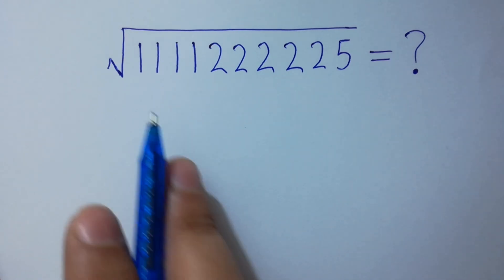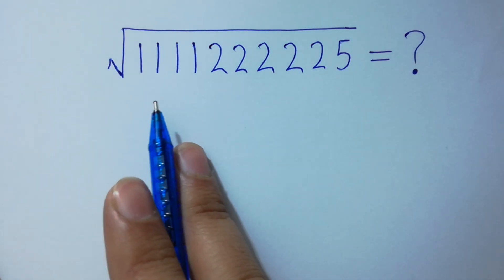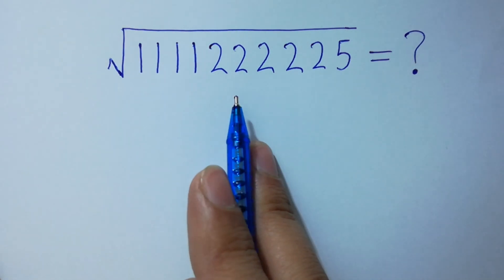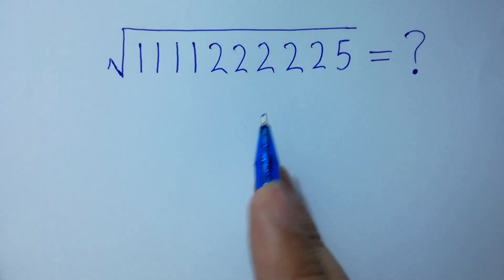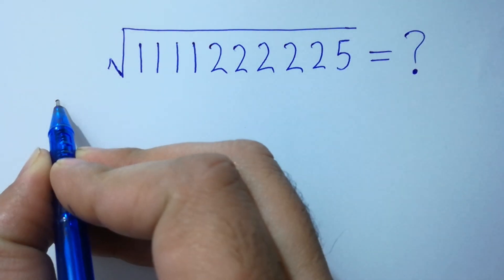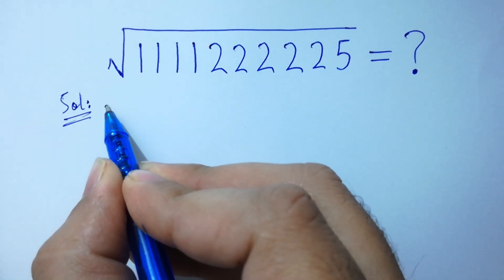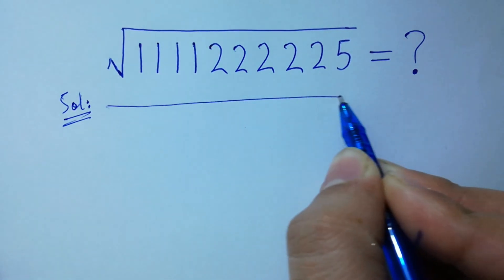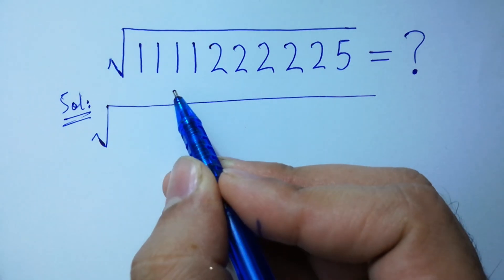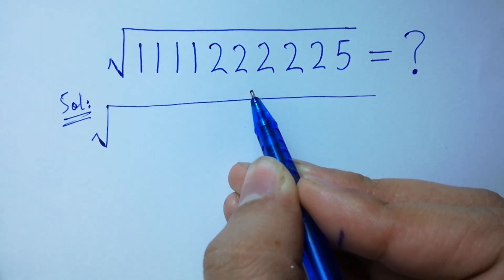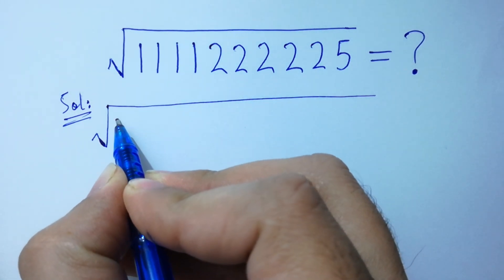Hello friends. How to simplify this problem: square root of 4 times 15 times 25 without using any calculator? Let's have a solution. Square root of 4 times 15 times 25 is the same as 4 times 1...